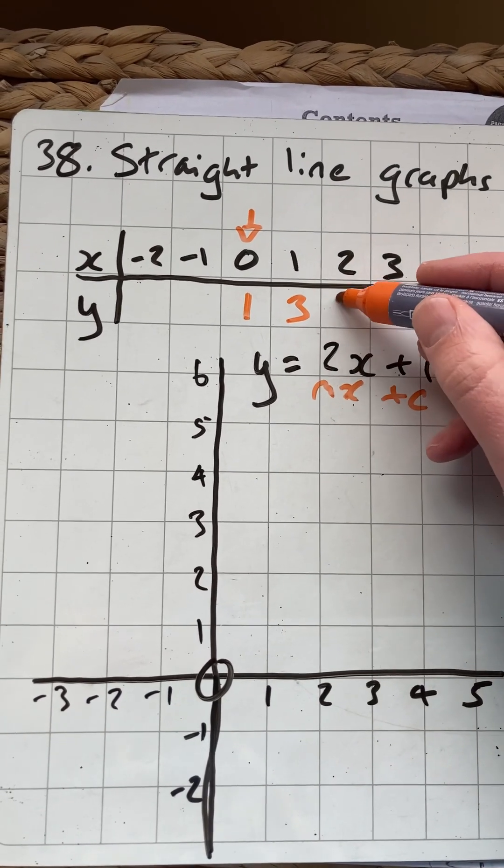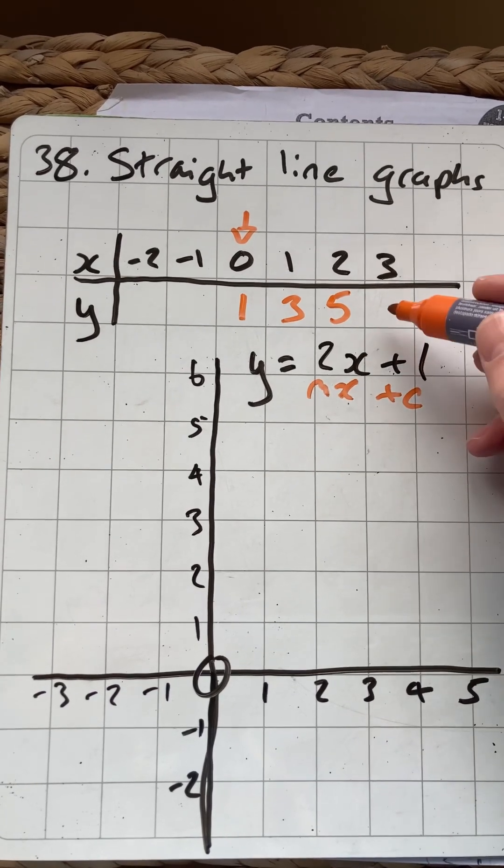2 times 2 is 4, plus 1 is 5. 3 times 2 is 6, plus that 1 is 7.